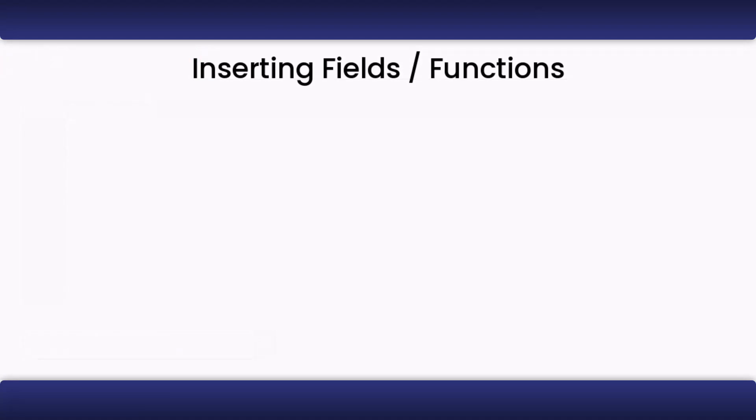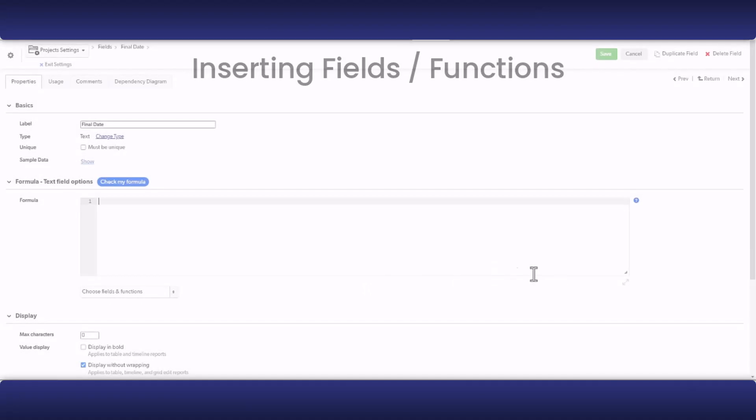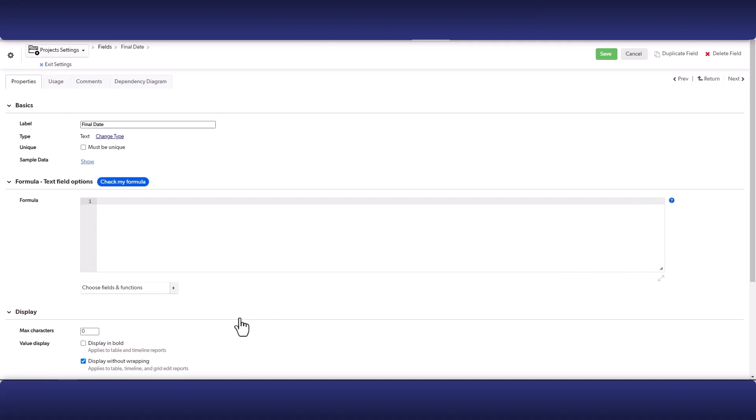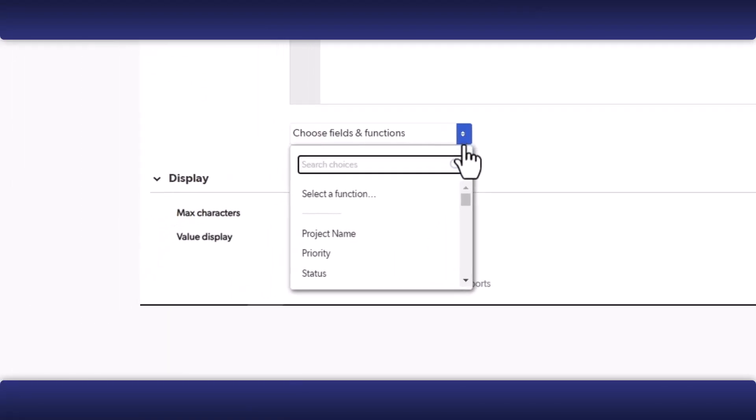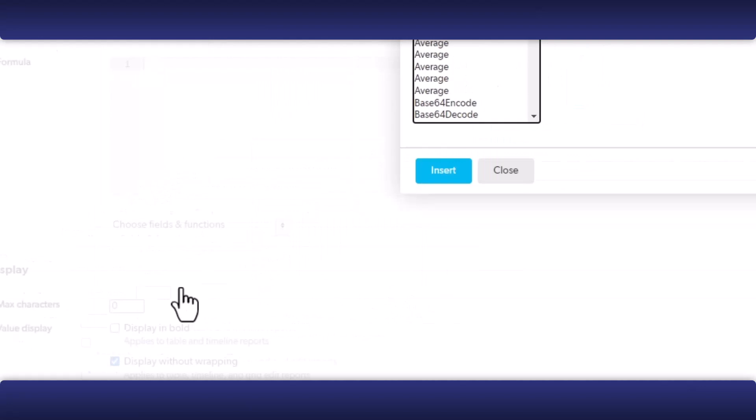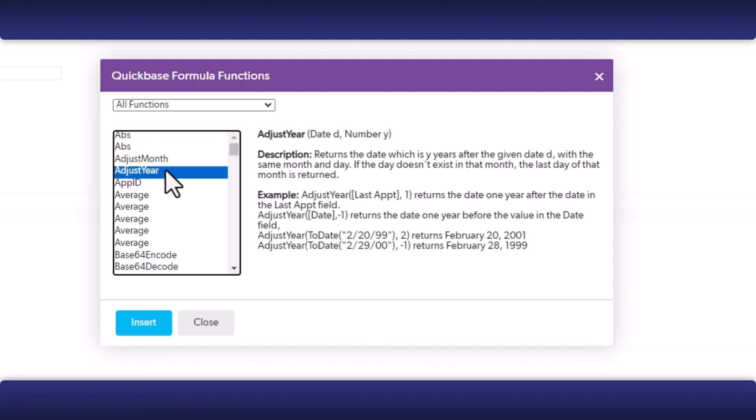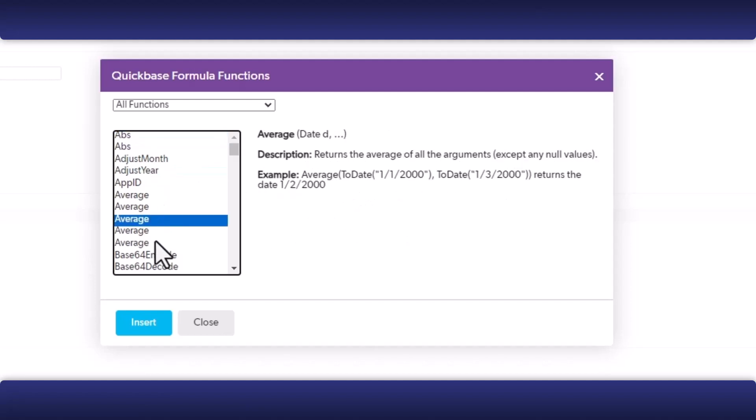The third and last way is using the Choose Fields and Functions dropdown. This dropdown will either be to the right or underneath the editor, depending on how large the editor is on your screen. When you open the dropdown, you can find fields in the search. At the top of the dropdown, you can also open up the Formula Function Dialogue, which will present you with a comprehensive list of all functions along with their parameters, descriptions, and examples.